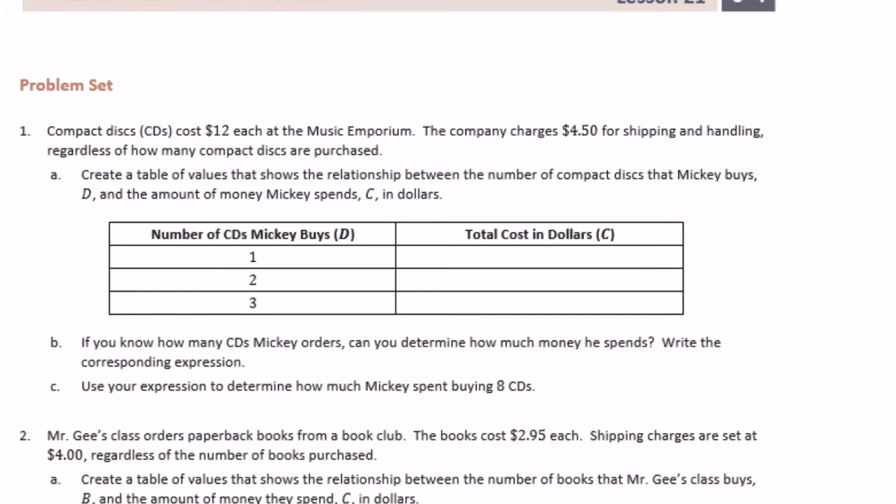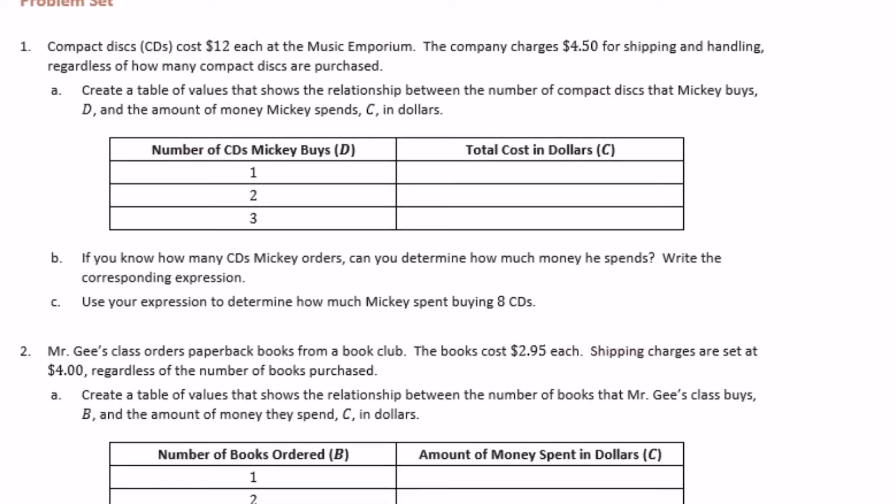6th grade, Module 4, Lesson 21 Problem Set Number 1. Compact discs, or CDs, cost $12 each at the Music Emporium. The company charges $4.50 for shipping and handling, regardless of how many compact discs are purchased.